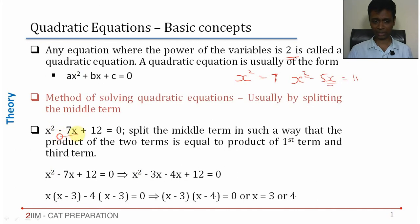Take this -7x, split -7 into two parts such that the product of the two parts is equal to 1 into 12.